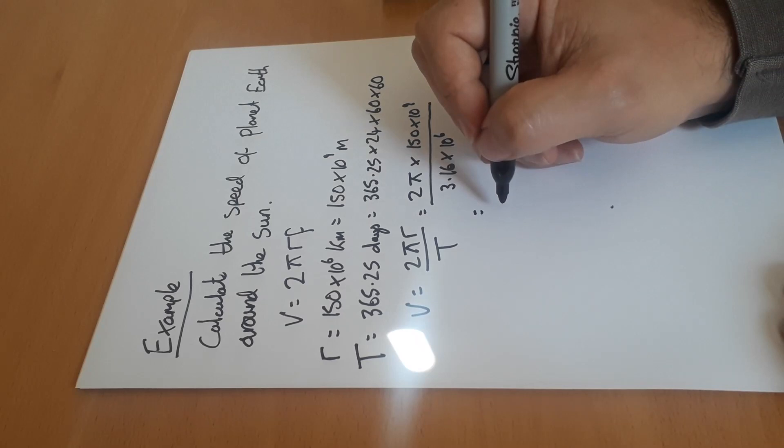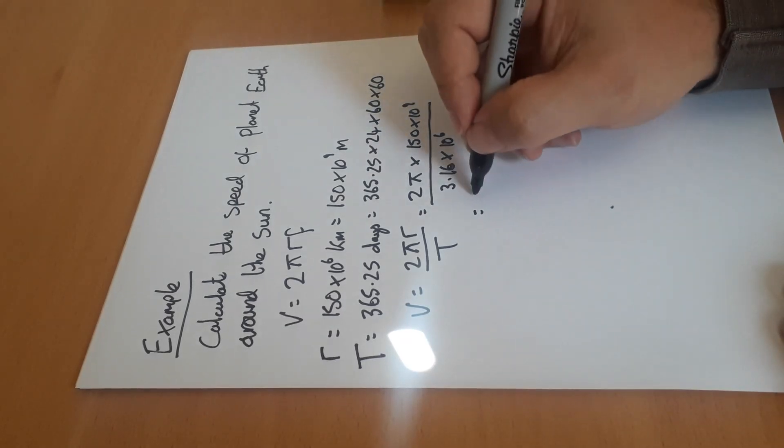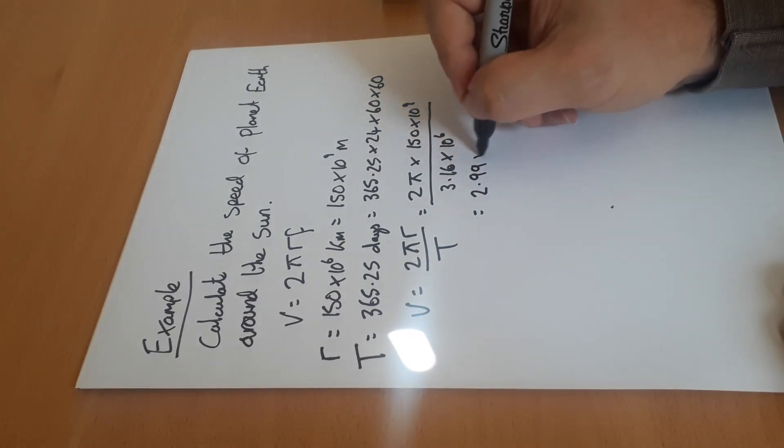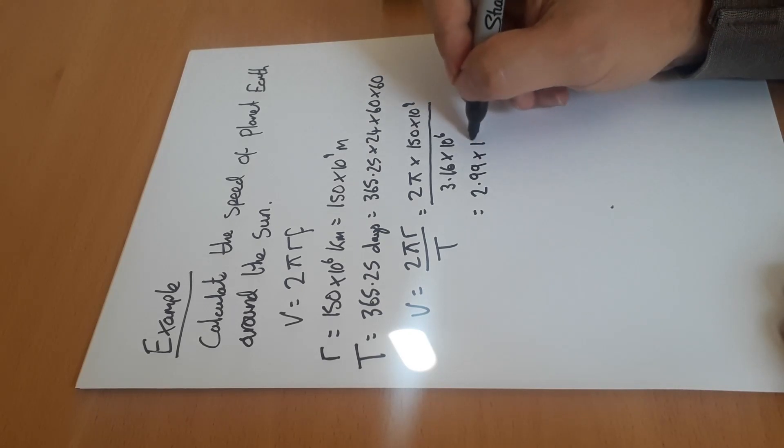Therefore the velocity of the Earth comes out at 2.99 times 10 to the 4 meters per second.